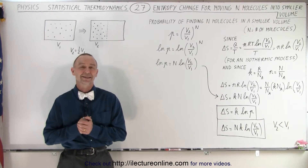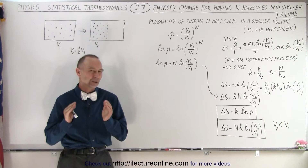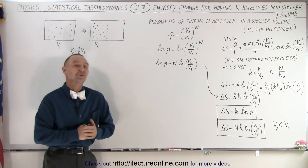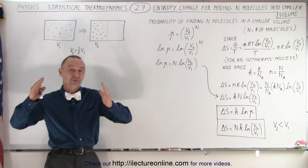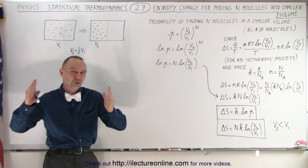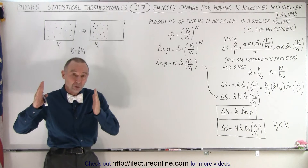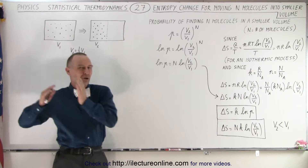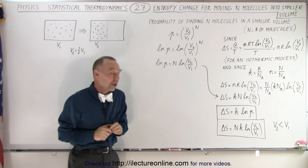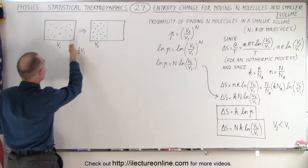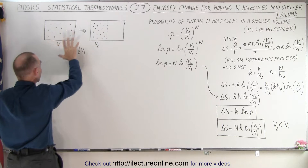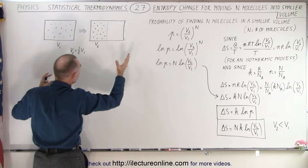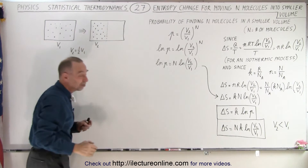Welcome to our lecture online. We're going to take a look at what the entropy change will be when we take a number of molecules in a box and reduce them into a smaller section of that box — essentially from a larger volume to a smaller volume. We have that illustrated right here: molecules in a box, then all the molecules moving to a smaller section of the box.